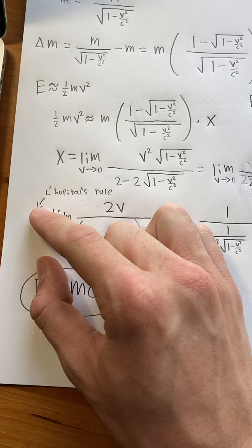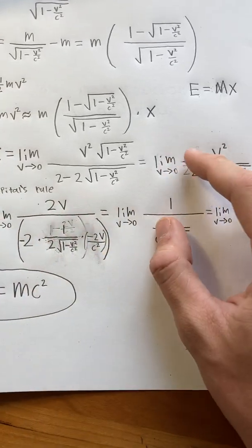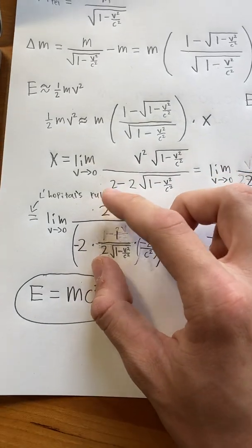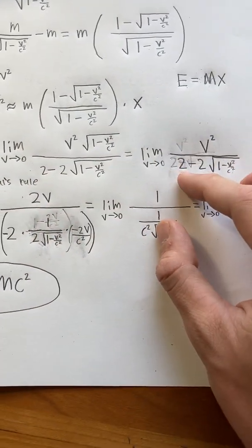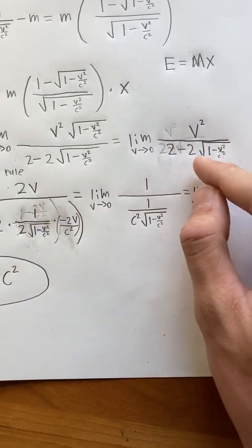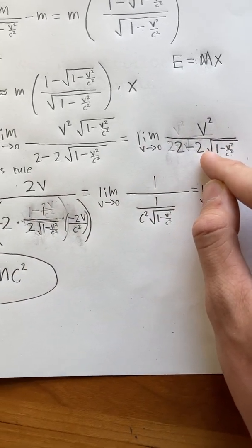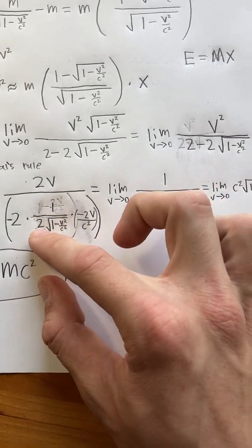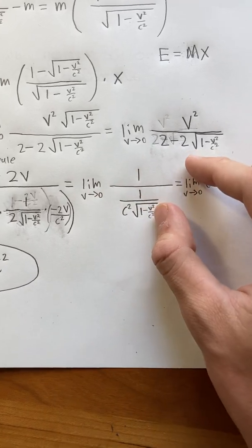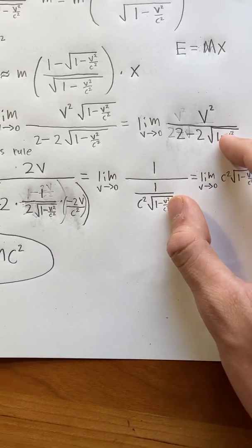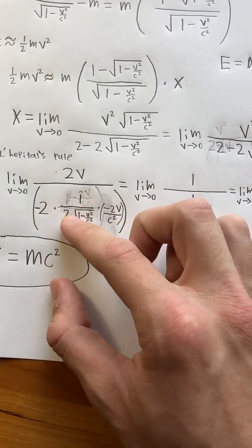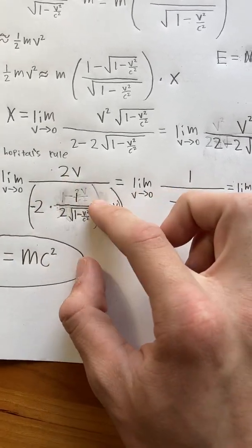So now what we can do is we apply L'Hôpital's rule, which turns the v squared into 2v. And the bottom, this 2 disappears because it's constant. This negative 2 stays. Then we use the chain rule to get that this part becomes 1 divided by 2 times the square root of 1 minus v squared over c squared. And then we have to take the derivative of the inner part, and that gives us negative 2v over c squared. And so we can do a lot of canceling out. These 2's cancel out. These minus signs cancel out. These 2's cancel out. And these v's cancel out.